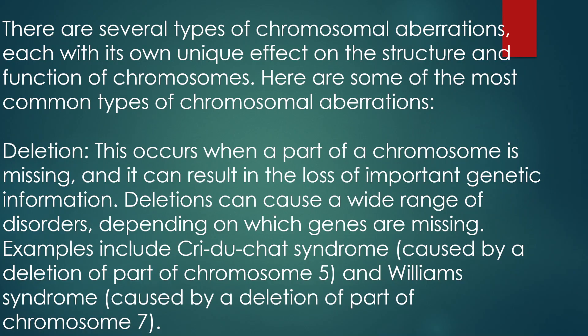The first one is Deletion. This occurs when a part of a chromosome is missing, and it can result in the loss of important genetic information. Deletions can cause a wide range of disorders depending on which genes are missing. Examples include Cri-du-Chat syndrome, caused by a deletion of part of Chromosome 5, and Williams syndrome, caused by a deletion of part of Chromosome 7.